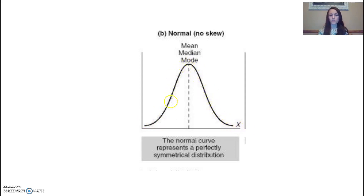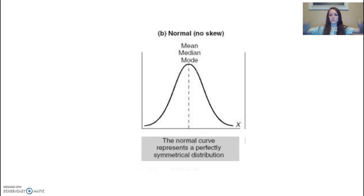Then it starts dropping off — fewer and fewer people score higher and higher until you get out into those big extremes like 150. This is called a normal distribution, or a bell curve, where the extremes are lower and it gets higher in the middle. If something is off where your mean, median, and mode are not the same, it's going to create a skew.